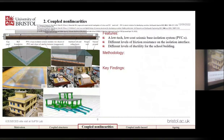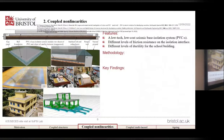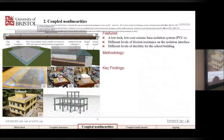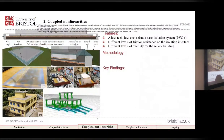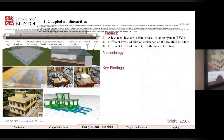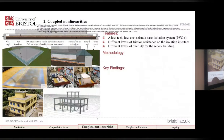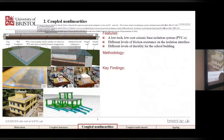We investigated the impact of different levels of frictional resistance of the isolation interface, and also different levels of ductility on the superstructure. The highest behavior factor allowed by the Eurocode is 1.5, so if you design according to the Eurocode you are expecting a near-elastic structure for base isolation. But for other parts of the world this is not necessarily the case — it is possible to implement a highly ductile structure with the application of base isolation.